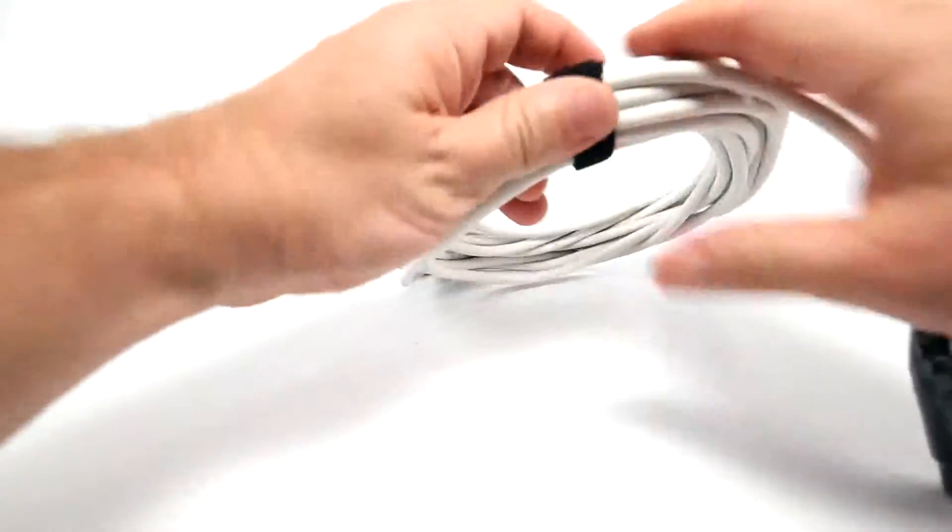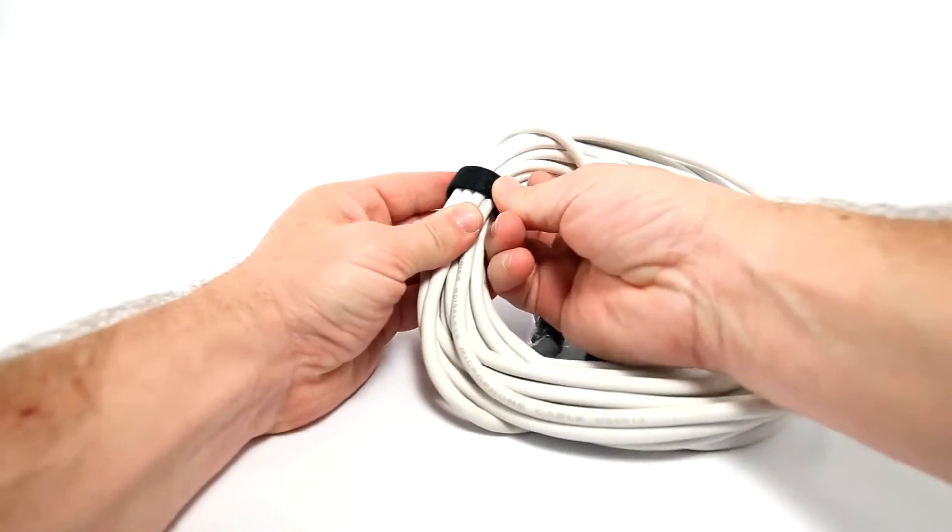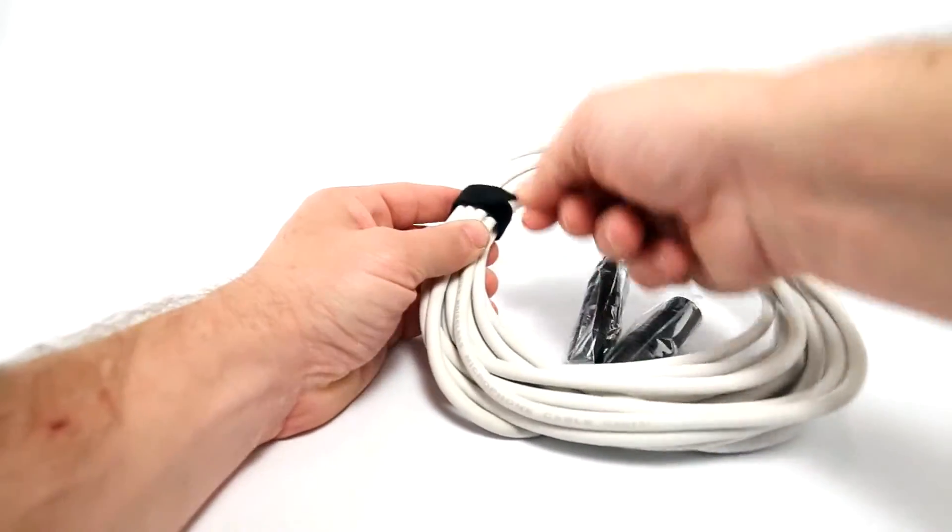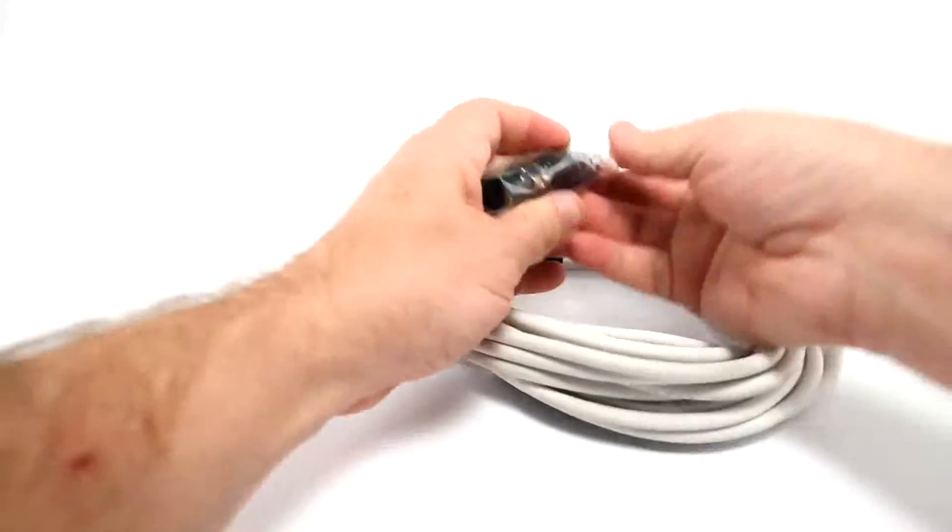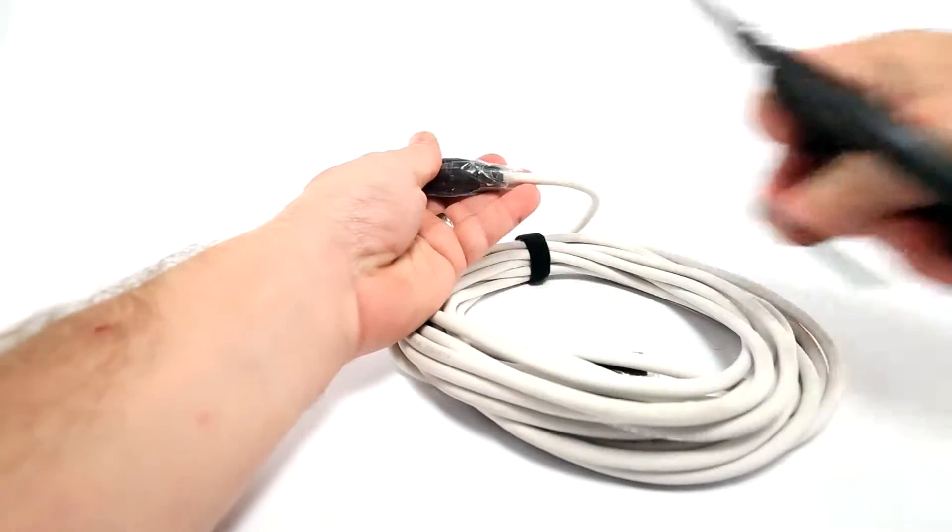Most cables nowadays will conduct the signal correctly and it's the shielding that really differentiates one cable from another. These cables have a braided 95% copper dual spiral shielding. The manufacturer says that offers protection from EMI and RFI noise.